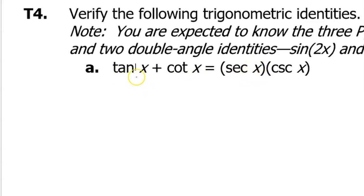One thing I can do is rewrite everything in terms of sine and cosine. So of course tangent is the same as sine over cosine and then cotangent is the same as cosine over sine.